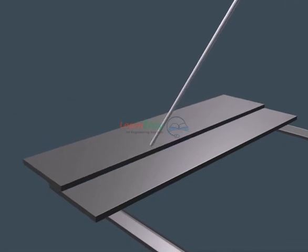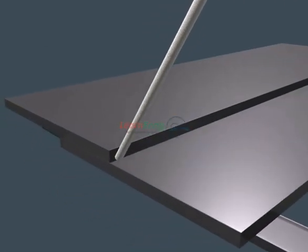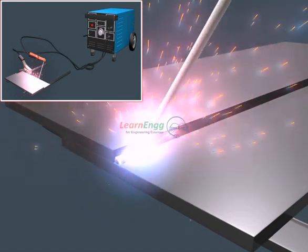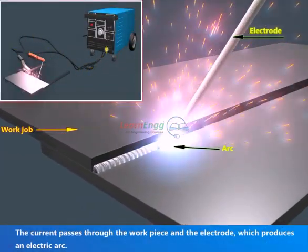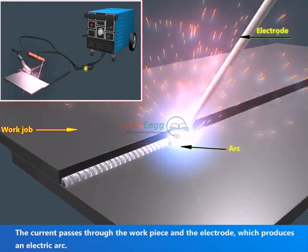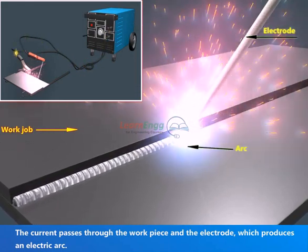In arc welding, the electrical energy is converted into heat energy. The current passes through the work piece and the electrode, which produces an electric arc.